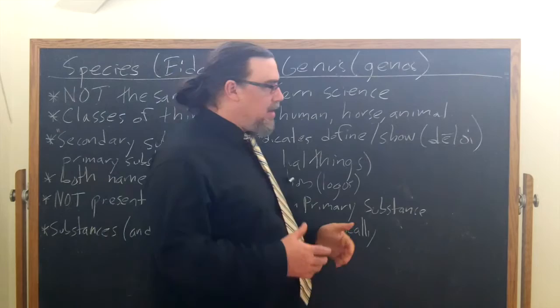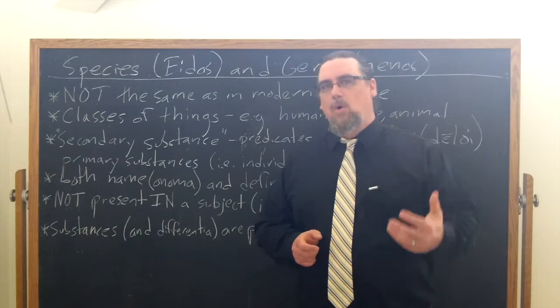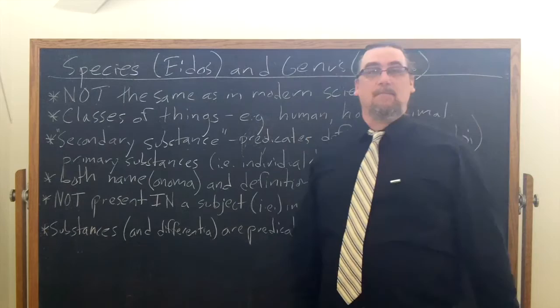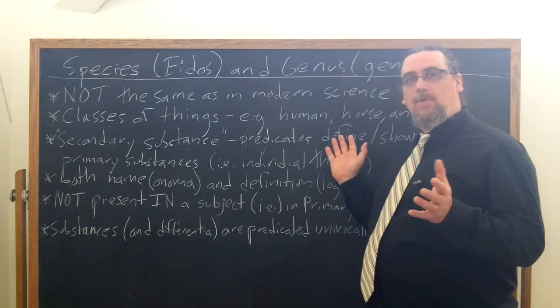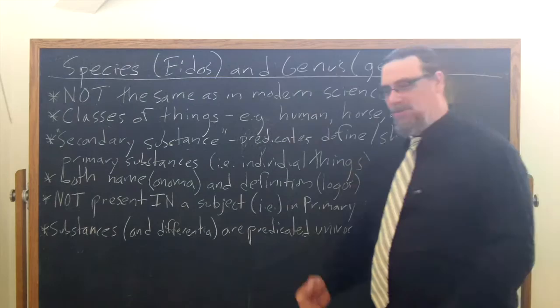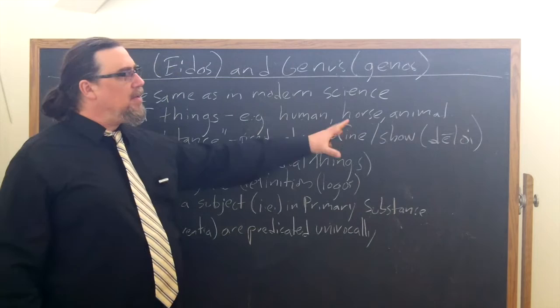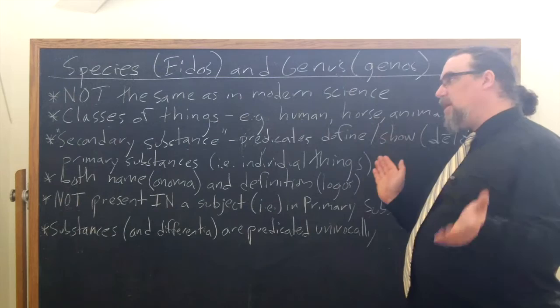I suppose you could index it to the past and say, when we're talking about extinct species, that we are talking about the class of things that used to exist, right? Like various dinosaurs or trilobites or interesting things along those lines, plants that no longer exist anymore as well. But anyway, secondary substances, he says that these alone among the various kinds of predicates define or show. And the word that he has there is deloi. They display, they denote, you might say primary substances.